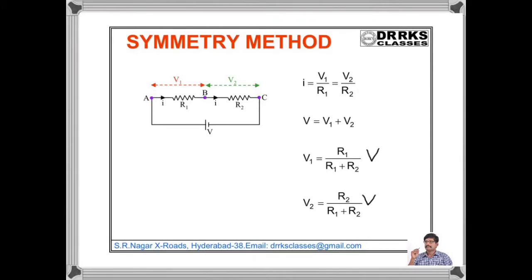Before going to the symmetry method, consider a simple circuit with two resistors R1 and R2 connected in series. We know that when two resistors are in series, the current flowing through them is the same — that is, V1 by R1 is equal to V2 by R2 — and the potential divides, so V equals V1 plus V2. If you simplify those two equations: V1 is R1 by (R1 + R2) into V, and V2 is R2 by (R1 + R2) into V.